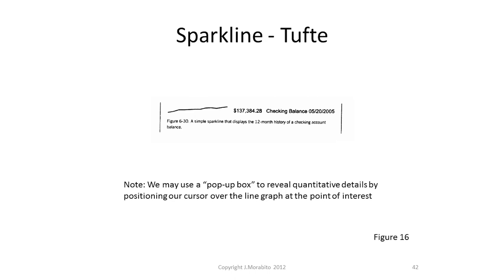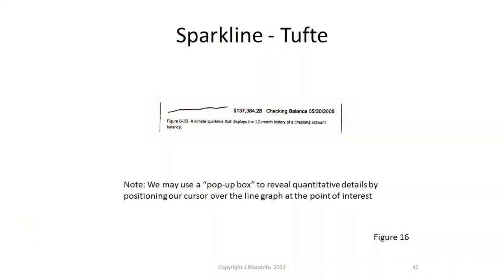Another idea by Edward Tufte — the spark line — is shorthand to show a trend. It's a single graphic showing a trend over time of something, typically money but could be sales or anything. For example, it shows a checking account balance of $137,000 over time and displays the current value where the line ends. If you want to see what it was a few months earlier, you simply put your cursor over that point and a pop-up box appears to tell you the value. This is very popular in the financial community. Tufte comes up with a lot of good ideas on how to make visualization simple.